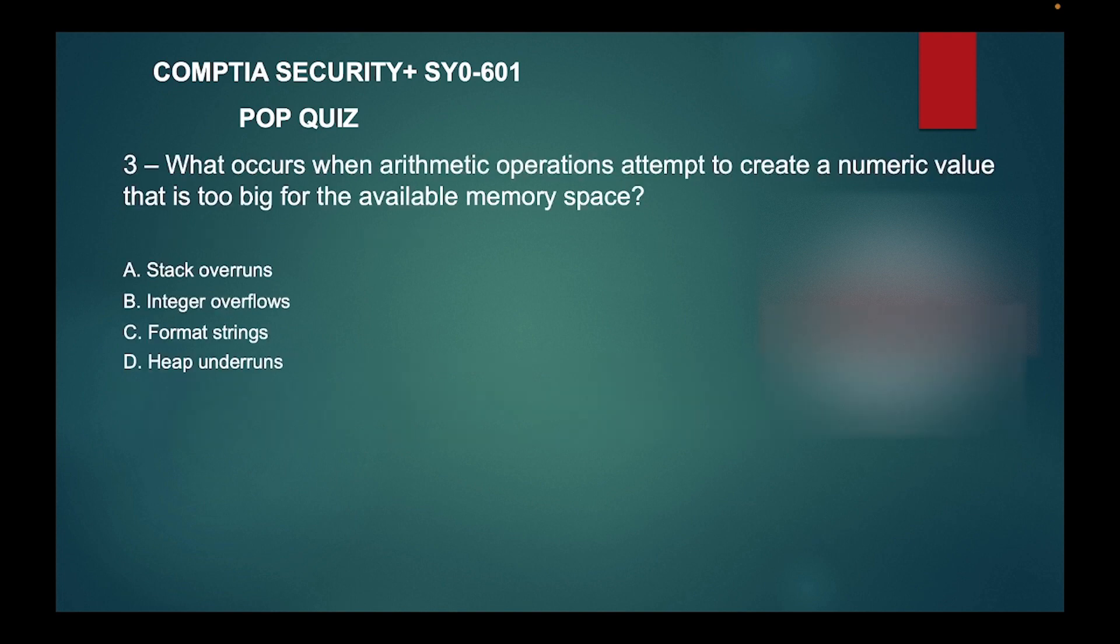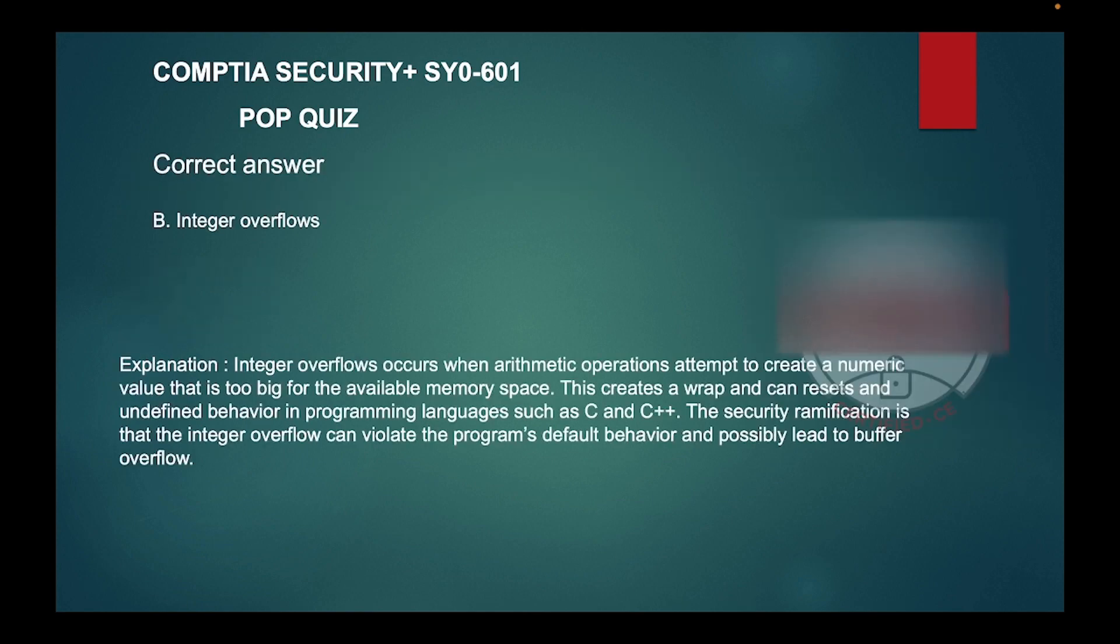Question three: what occurs when arithmetic operations attempt to create a numeric value that is too big for the available memory space? A: Stack overruns, B: Integer overflows, C: Format strings, or D: Heap underruns?